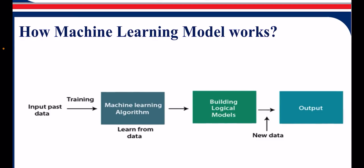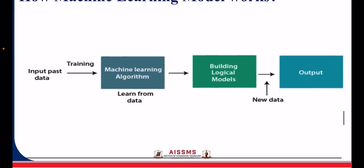To summarize: we have an input dataset, we give training to that data, we do all the processes, we build and train the model. Then with new data, the testing dataset is given, and finally we get the output.